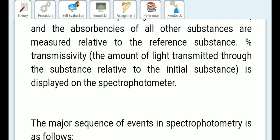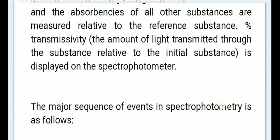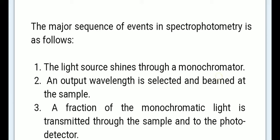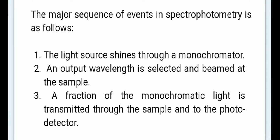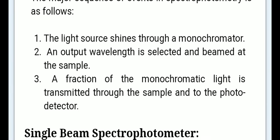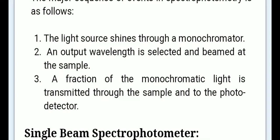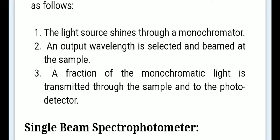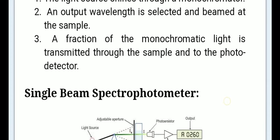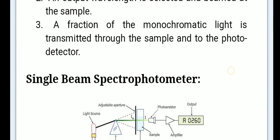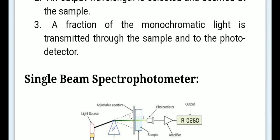The percentage transmittance — the amount of light transmitted through the substance relative to the initial source — is displayed on the spectrophotometer. The major sequence of events in spectrophotometry are: first, the light source shines through a monochromator; second, an output wavelength is selected and beamed at the sample; third, a fraction of monochromatic light is transmitted through the sample to the photodetector.